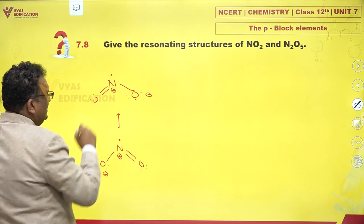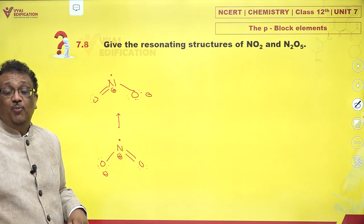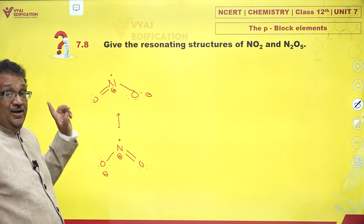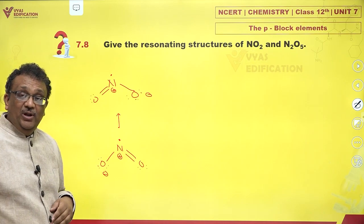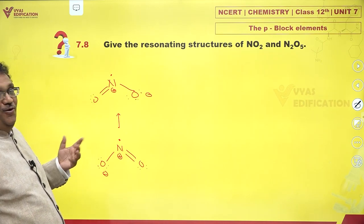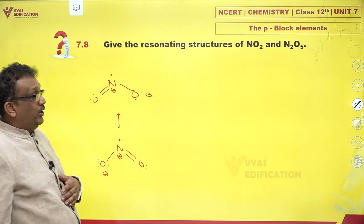You have these as formal charges. So bond order of NO bonds is 1.5 and octet of nitrogen is incomplete. Unpaired electron is present on nitrogen and these are the contributing structures of NO2. What about N2O5?